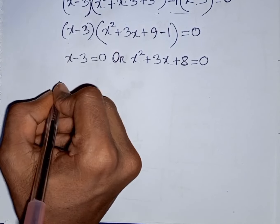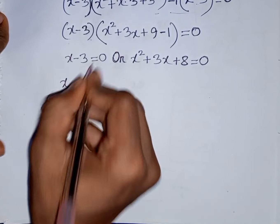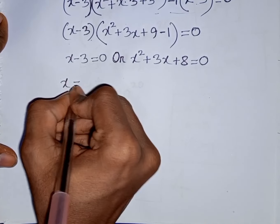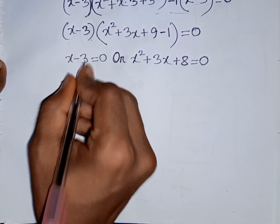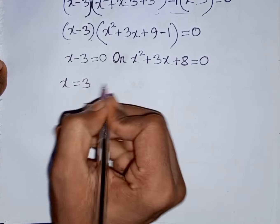Now we can write x is equal to — take minus 3 to the right side, so this will be plus 3. Therefore x is equal to 3.